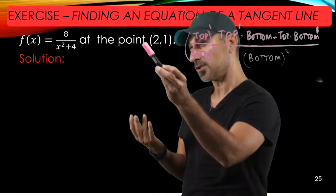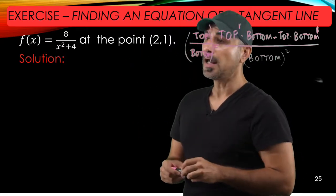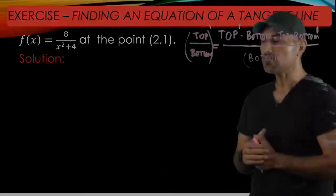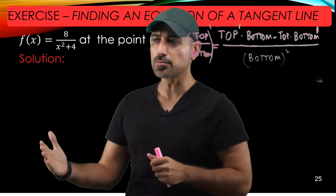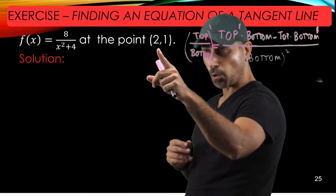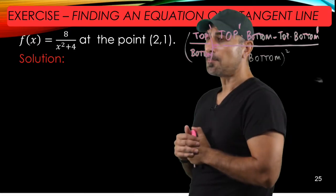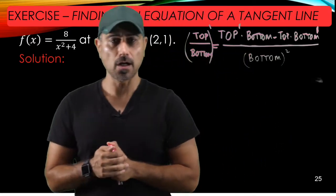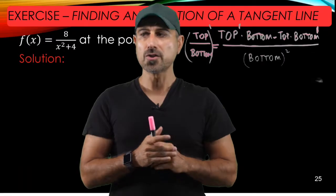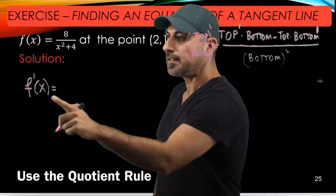Recall from the previous section that the first derivative evaluated at the x-coordinate of the given point provides us the slope of the tangent line to the function at that point. So let's start.